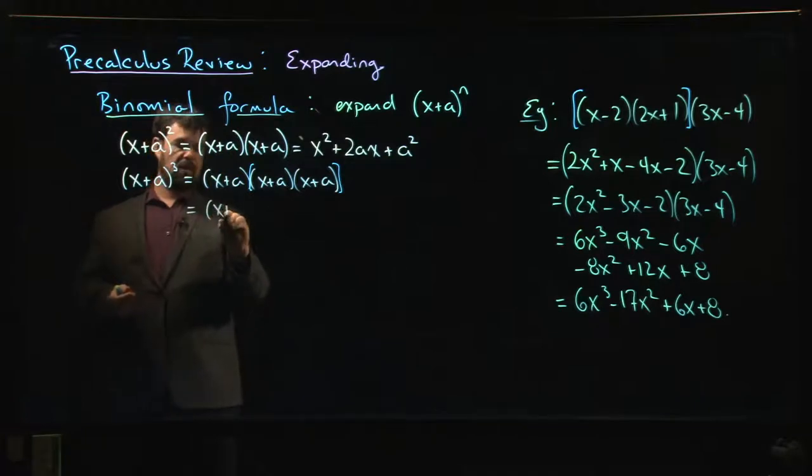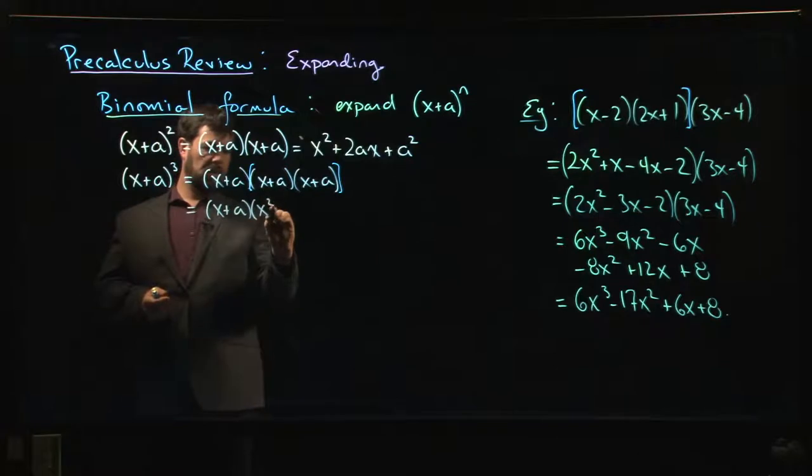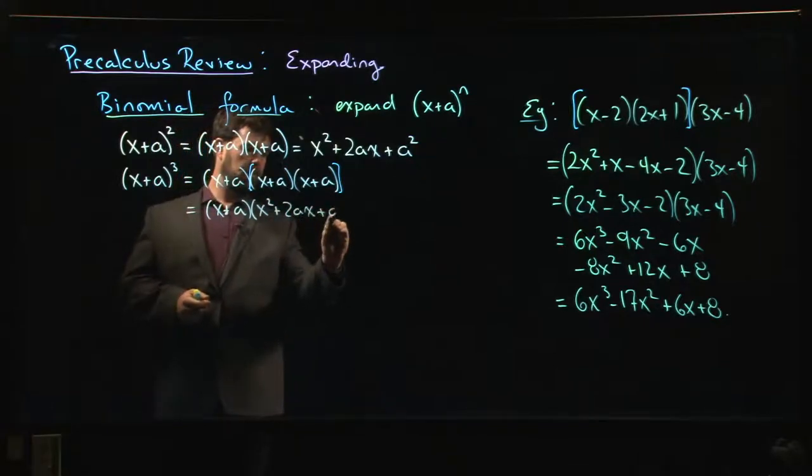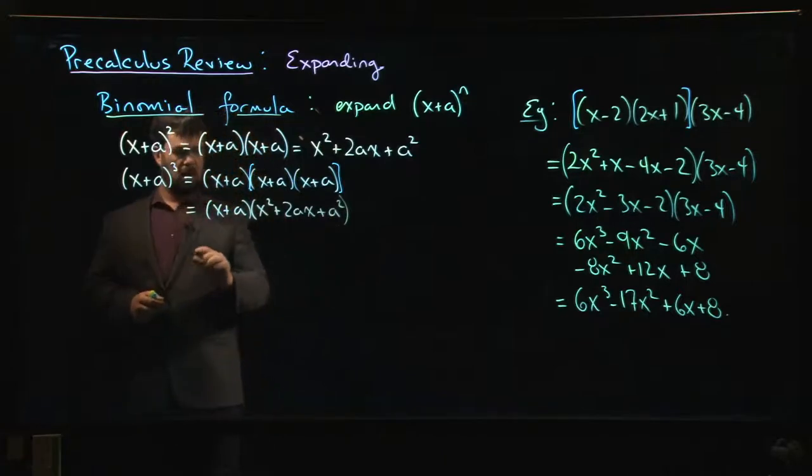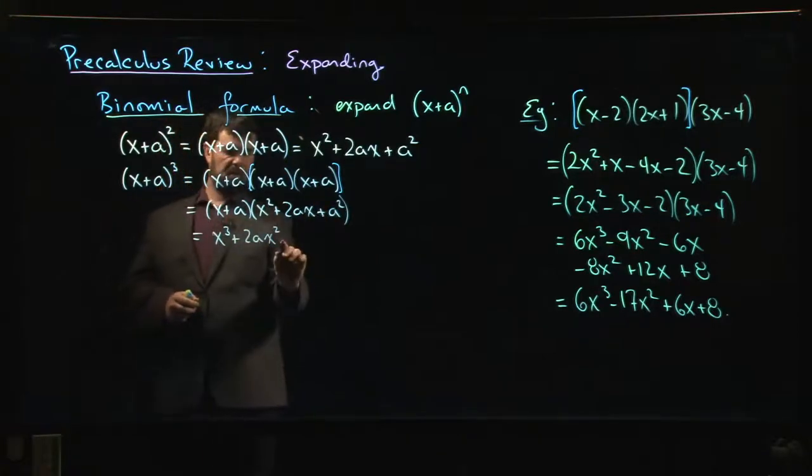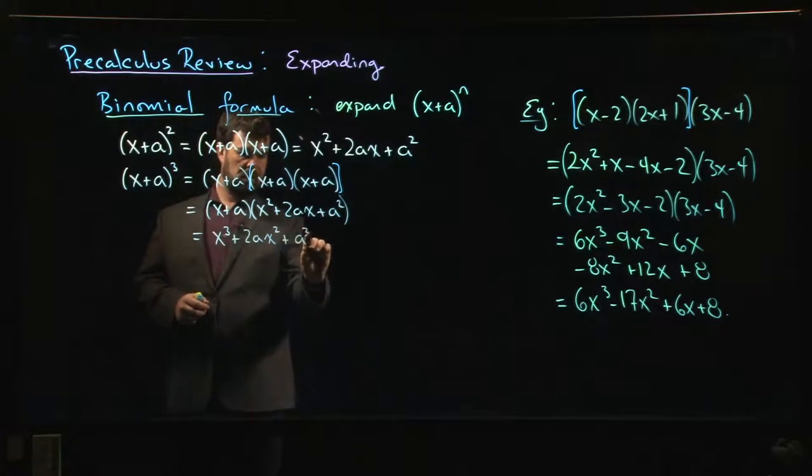So no need to redo it—let's just copy down our answer from above: x² + 2ax + a². Now we multiply through. x times x² is x³, x times 2ax is 2ax², x times a² is a²x. a times x² is ax².